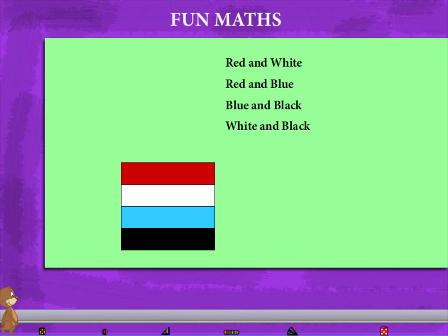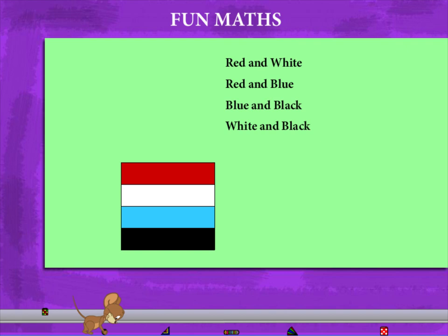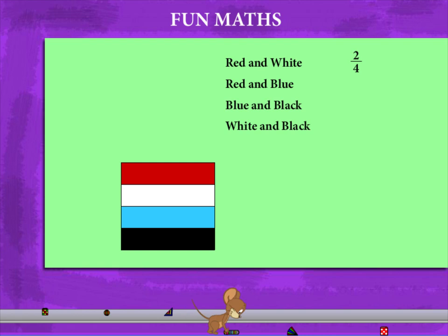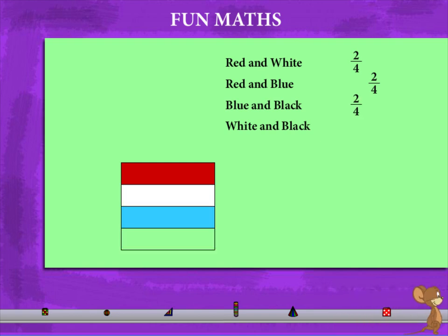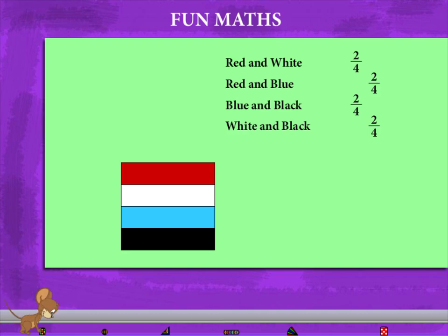they form the fraction 2 upon 4, because it represents two parts out of the total 4. Red and white is 2 upon 4, red and blue is 2 upon 4, blue and black is 2 upon 4, and white and black are also 2 upon 4.